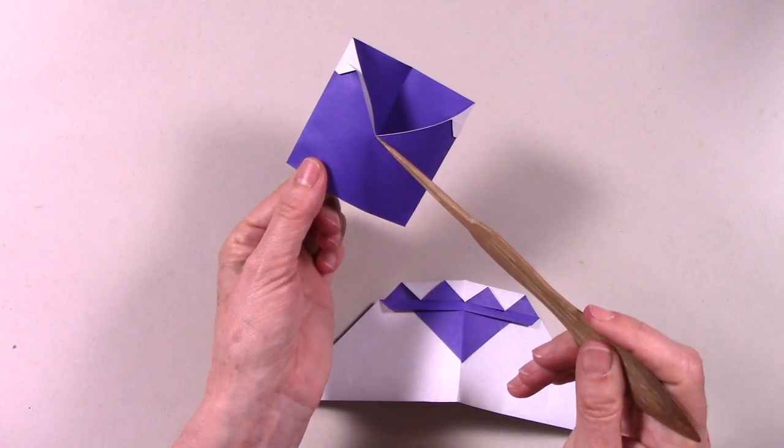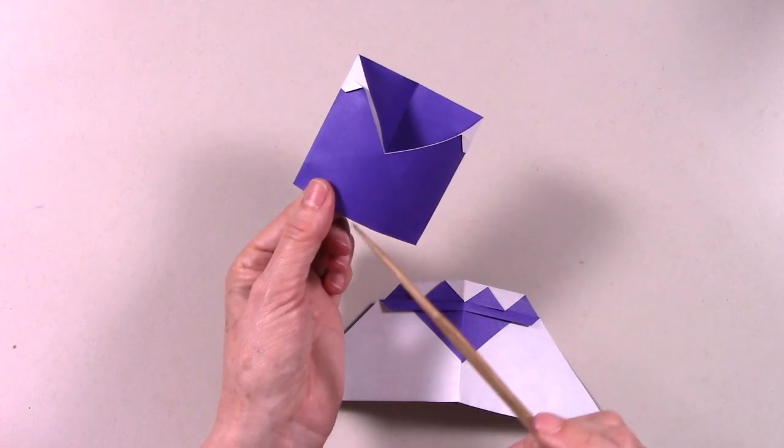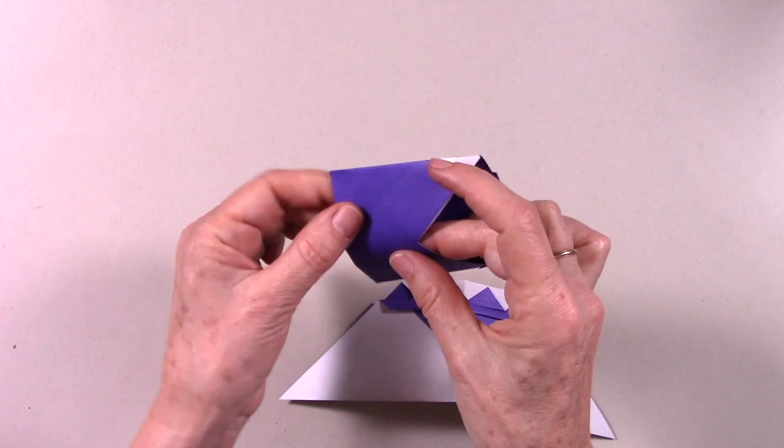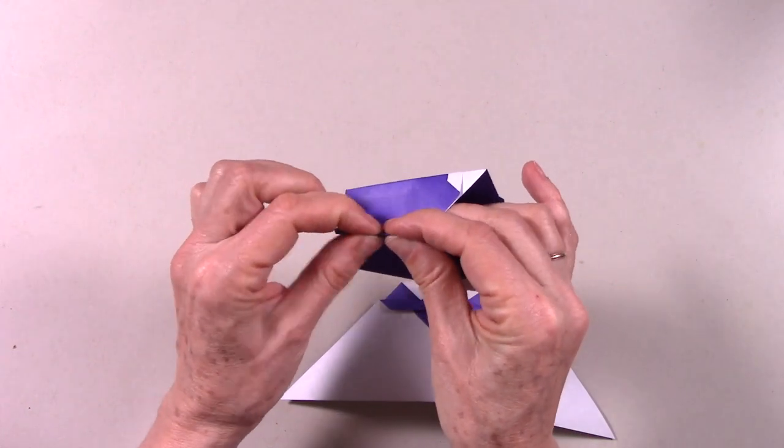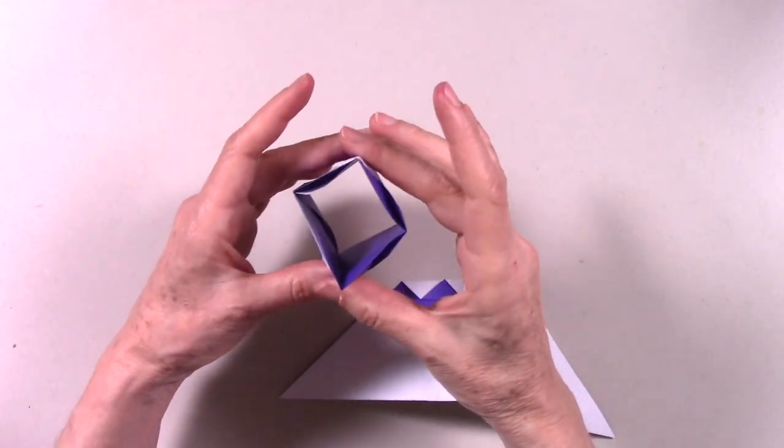we are going to make a fold, a mountain fold, coming from this corner down to the folded edge. If we look from above, we can see that it's like a box.